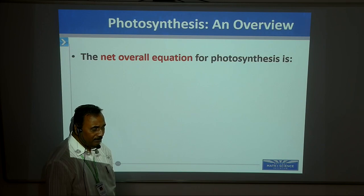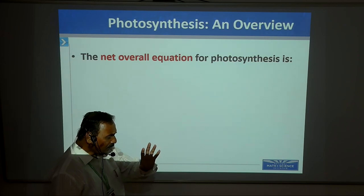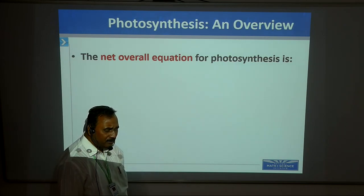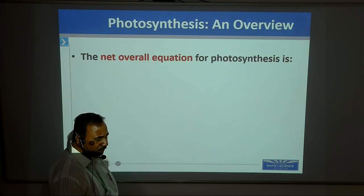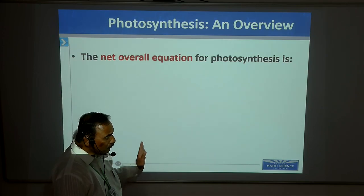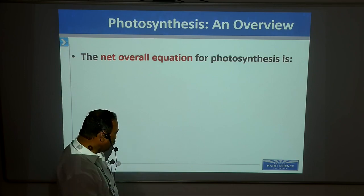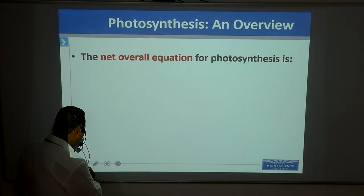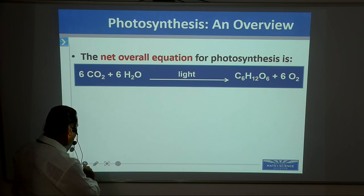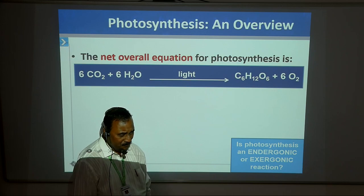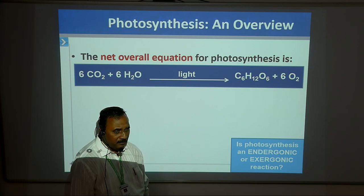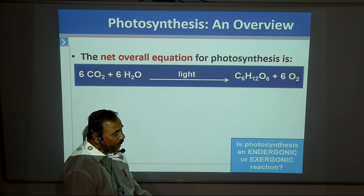Because in the chloroplast, in the grana region of the chloroplast, the thylakoid membranes are present. These thylakoid membranes show granular particles. These granular particles are nothing but chlorophyll pigments. There are different types of chlorophyll pigments. These chlorophyll pigments are actually essential for the absorption of this radiant energy. Only the visible spectrum of light is useful for photosynthesis.